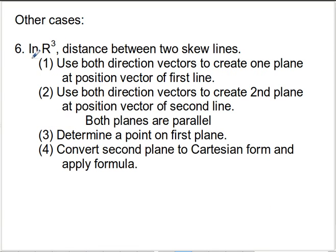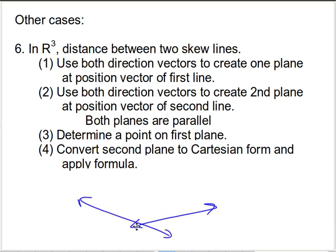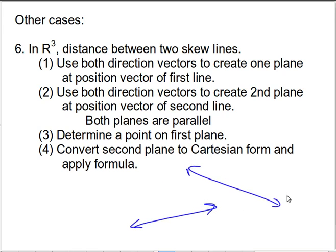The last case, and the most difficult one, is what happens if we have a couple of skew lines. These are not parallel lines, and it's really difficult to represent in a diagram on a flat surface. So there's one of the lines, and then there's the other line — you have to imagine this in R3, where this line can actually pass over top of the other line without touching. So it's not as if they're going to intersect; one line is passing underneath the first. I have some steps laid out here, and I'll go through them in more detail. The idea is we're going to use the direction vectors of these two lines to create planes for each of the lines, find a point on one of the planes, and then find the distance between the point and the plane.